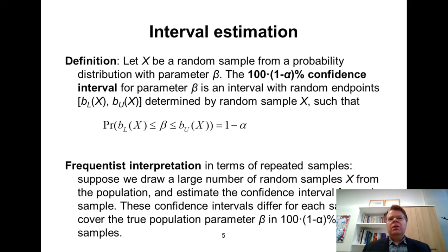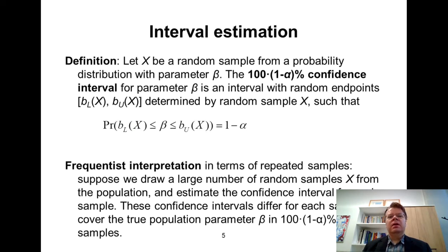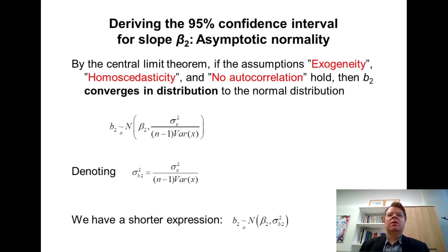Next I will walk you through how we actually calculate the confidence interval based on an observed sample. Typically in regression analysis, you don't need to calculate confidence intervals yourself — your statistical software will do it. If you are thoroughly familiar with how the confidence interval is derived and calculated, you may skip to the next lesson. But in the following part of this lesson, I will formally show you how to derive the confidence interval for the slope, which clarifies how Excel or whatever statistical software you use actually calculates it.